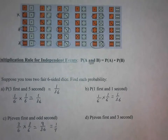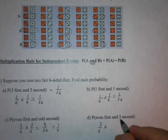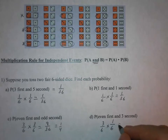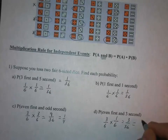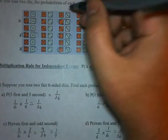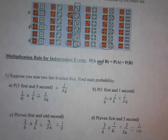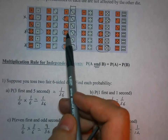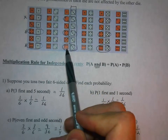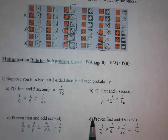Getting an even on the first and a three on the second — the three on the second has to be in that column, and which of those have an even first? The two, four, and six are even on the first with a three on the second, so there are three outcomes out of 36. Notice that one-three, three-three, and five-three would not have counted in order to get an even first and three second.